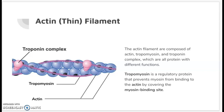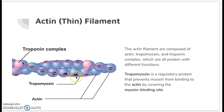First, let's go over the actin filament, also known as the thin filament. The actin filament is composed of actin, tropomyosin, and the troponin complex, which are all proteins with different functions. The tropomyosin is a regulatory protein that prevents myosin from binding to the actin by covering the myosin binding sites, which are the small dark circles underneath this structure here.